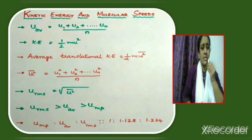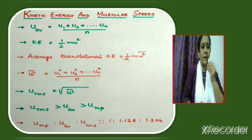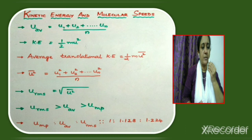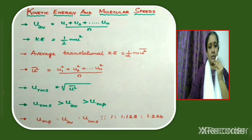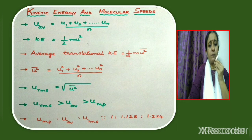Kinetic energy is given as (1/2)mu². To get the average translational kinetic energy, which equals (1/2)m·u²_bar, we need the mean square speed: u²_bar = (u1² + u2² + ... + un²) / n. The square root of the mean square speed gives the root mean square speed, u_rms = √(u²_bar).